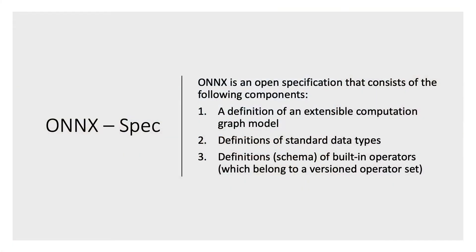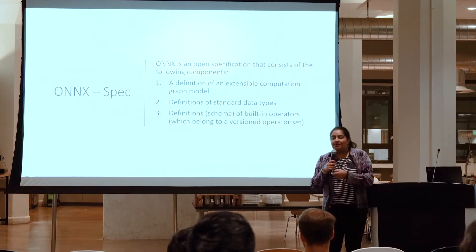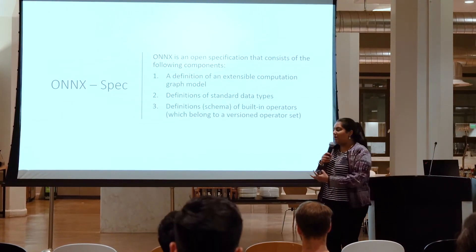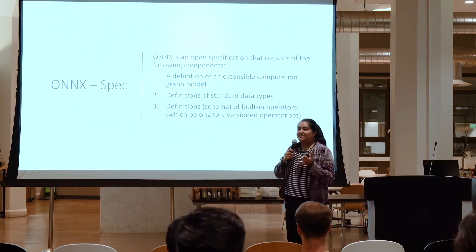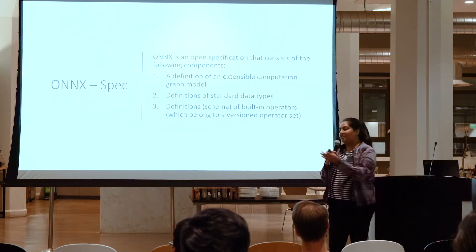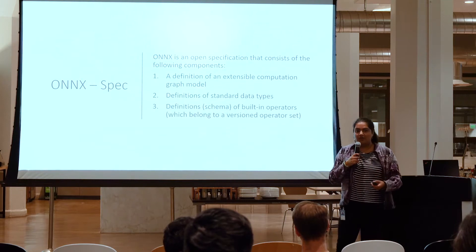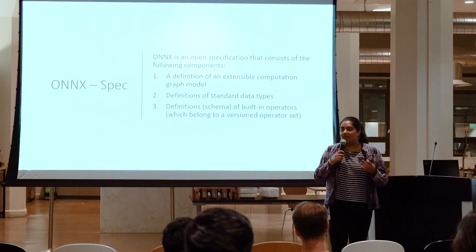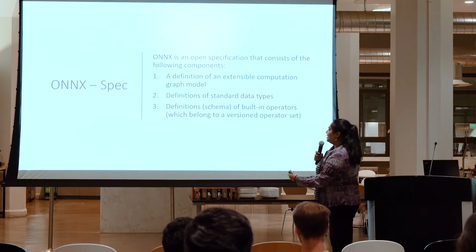Going into more detail on our operator spec, there are three main components. First, we want an extensible computational graph model — defining a model format that represents nodes, operators, inputs, and outputs. Second, we need definitions of standard data types: ways to represent tensor types and non-tensor types. Third, we want a definition of our operators — our schema sets and operator versioning sets.